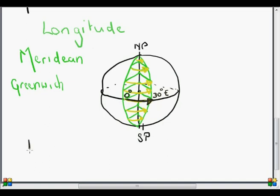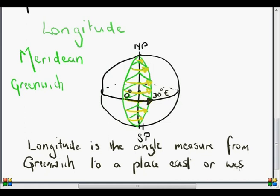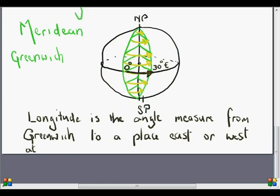So let's once again write that definition down. Longitude is the angle measured from Greenwich Meridian to the Earth's axis, from Greenwich Meridian to a place east or west of Greenwich Meridian.